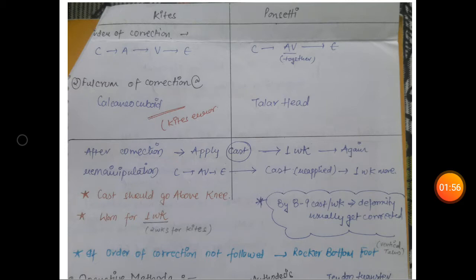Fulcrum of correction is at calcaneo-cuboid in Kites method and at talar head in Ponseti method. This fulcrum at calcaneo-cuboid in Kites method is known as Kites error. After correction, you will apply cast for one week. In Kites method, the cast is applied for two weeks, while in Ponseti method it is applied for one week.